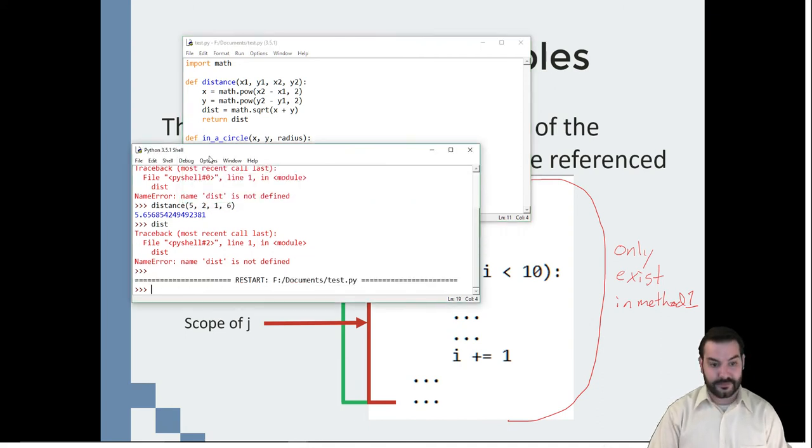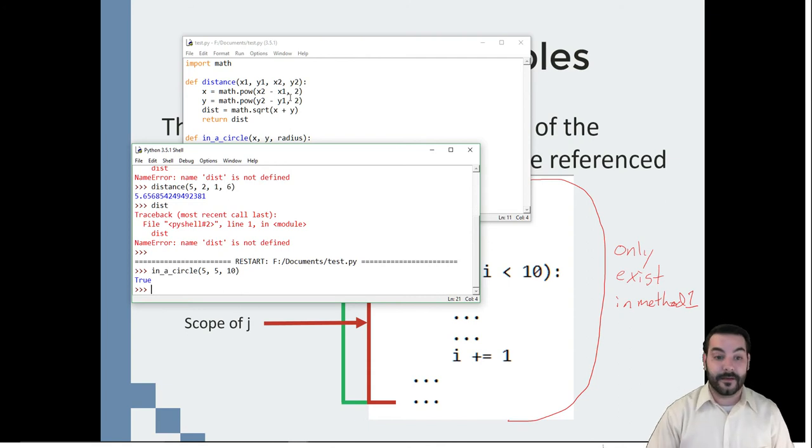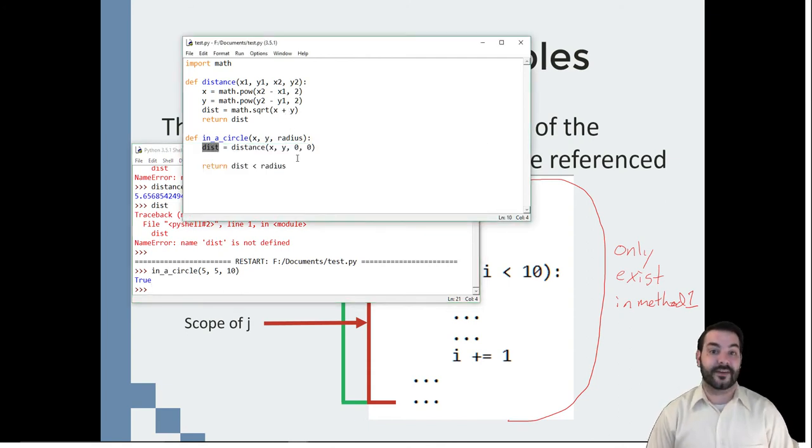I run this, and I say in a circle is 5, 5, in the circle, that is radius 10. True.